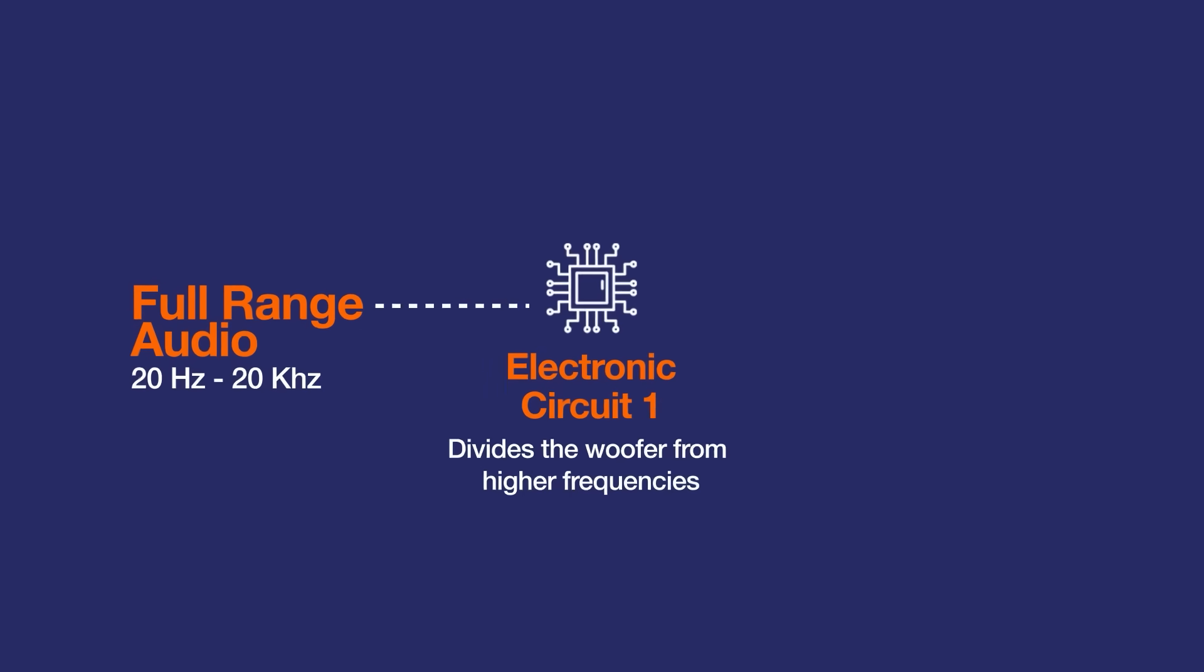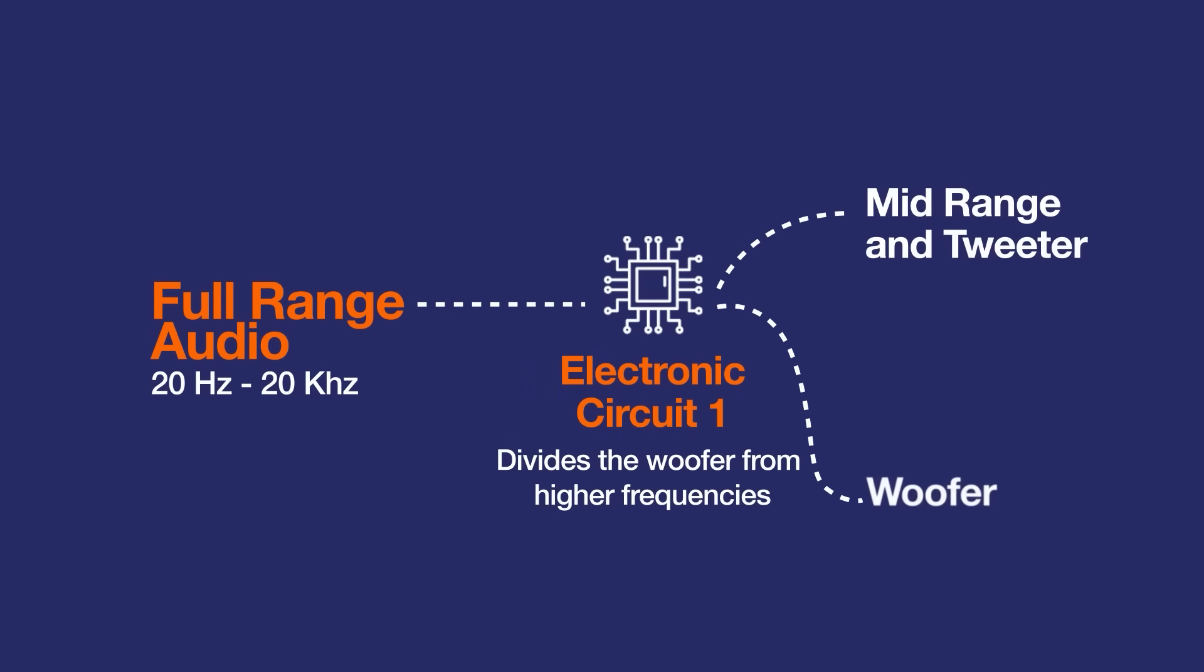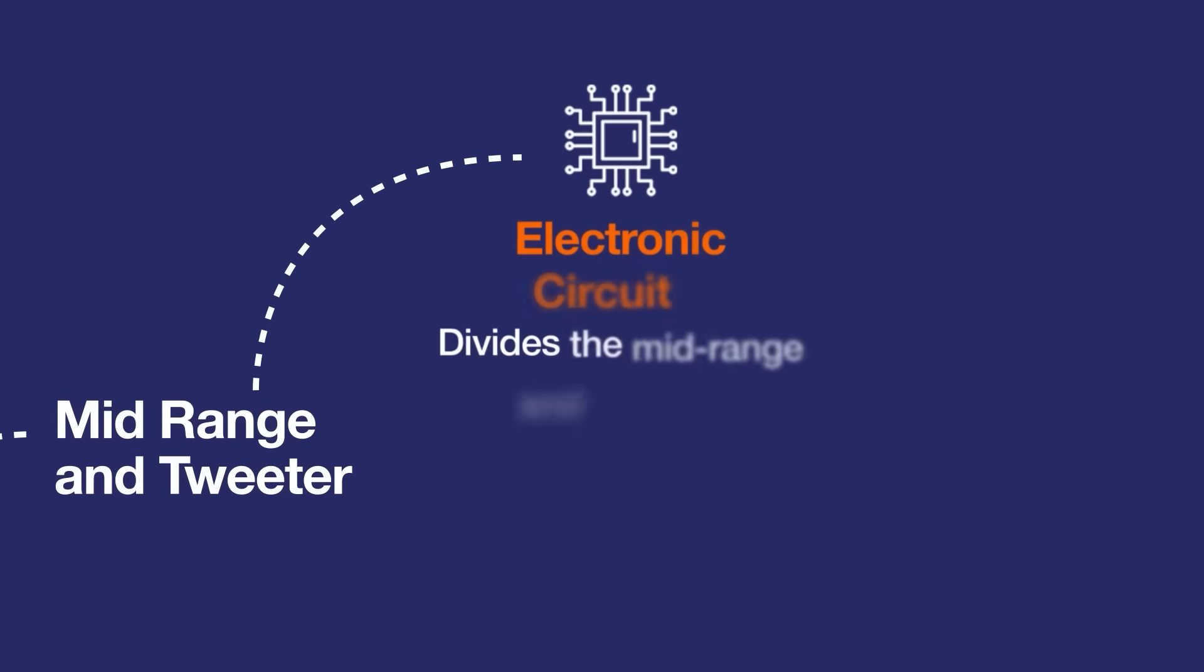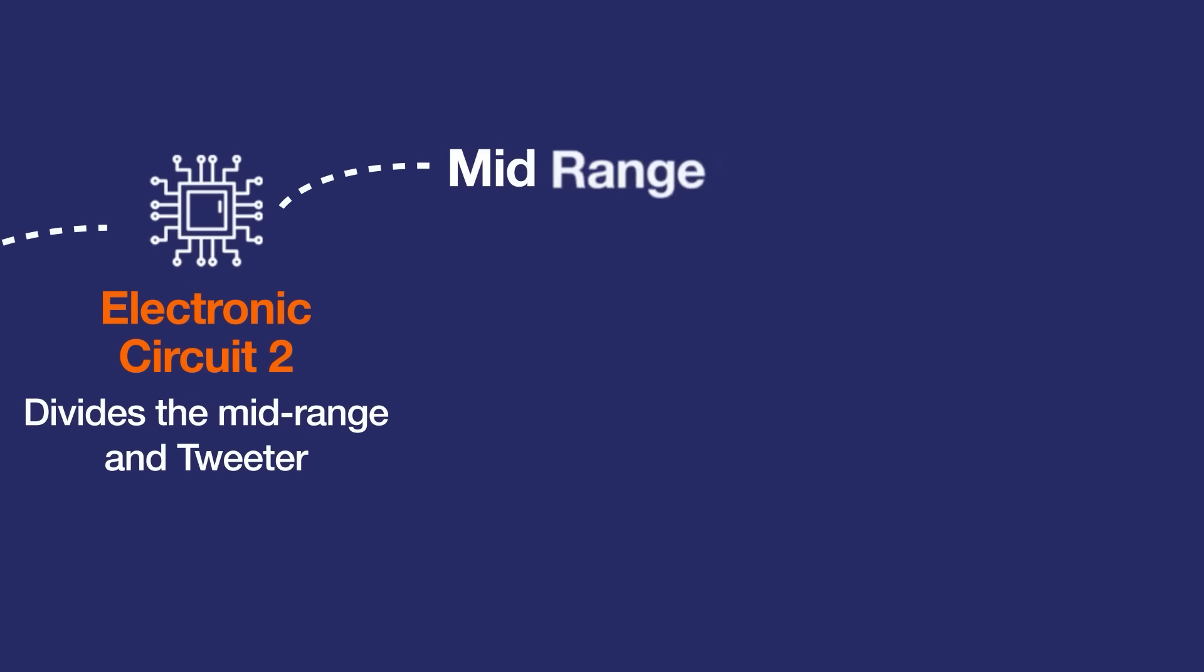So when the full range signal comes in there is a piece of electronic circuitry that divides the mid range and the woofer. That piece says everything below 200 hertz goes to the woofer and everything above goes to these two drivers. Then there is a second piece of circuitry that says everything below 2000 hertz comes to the mid range and everything above 2000 hertz goes to the tweeter.